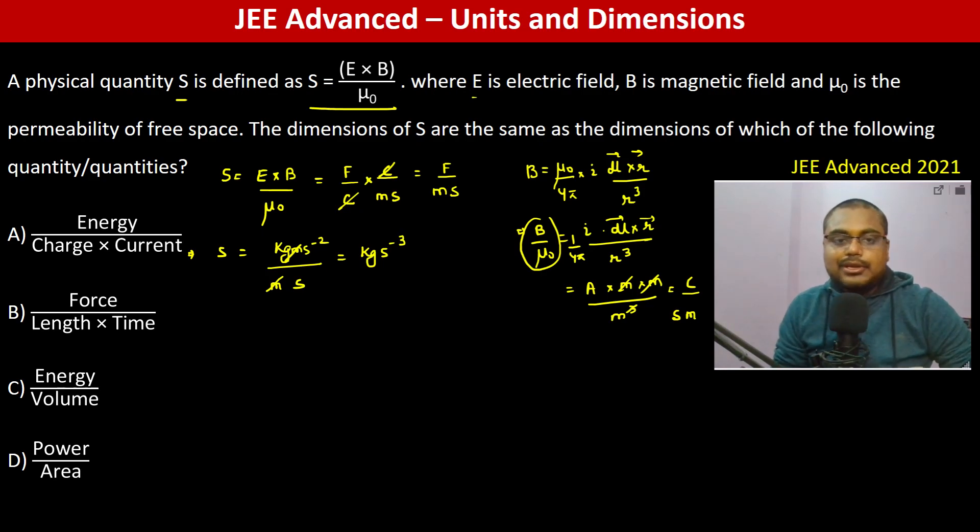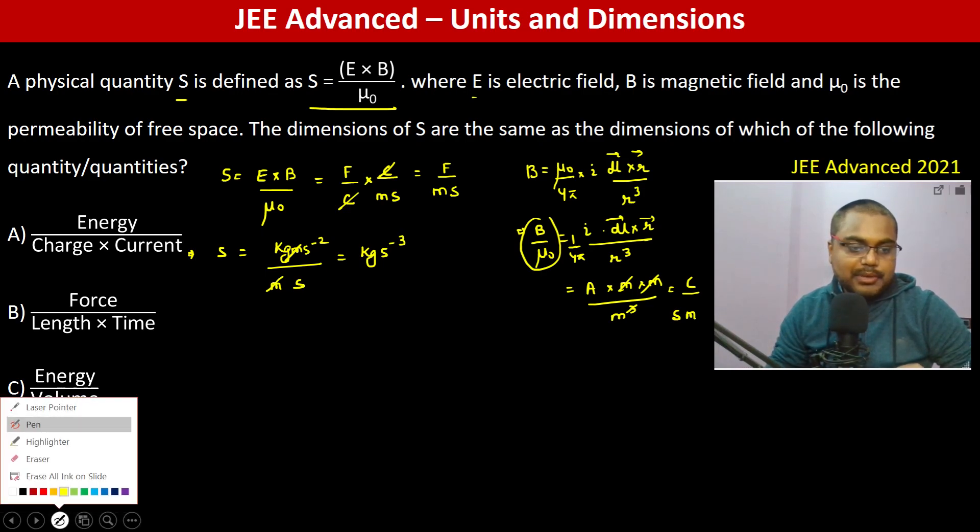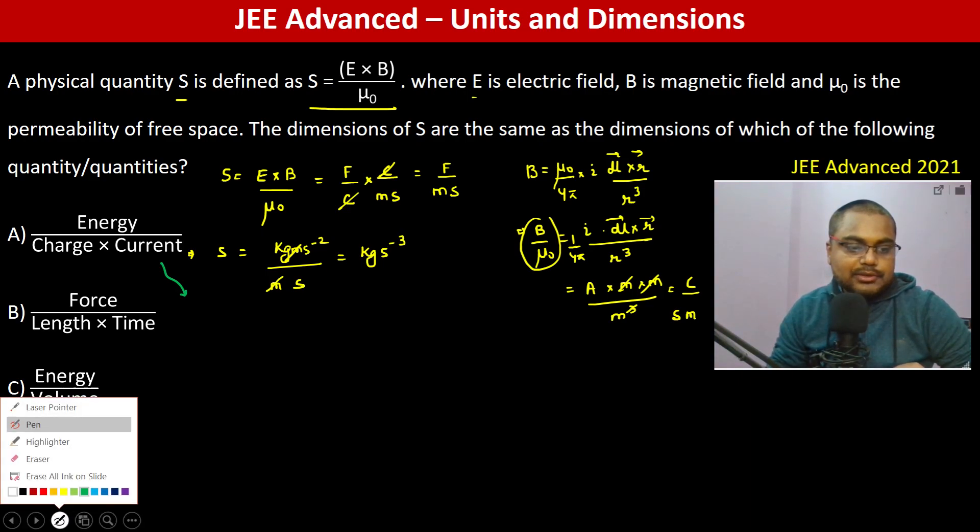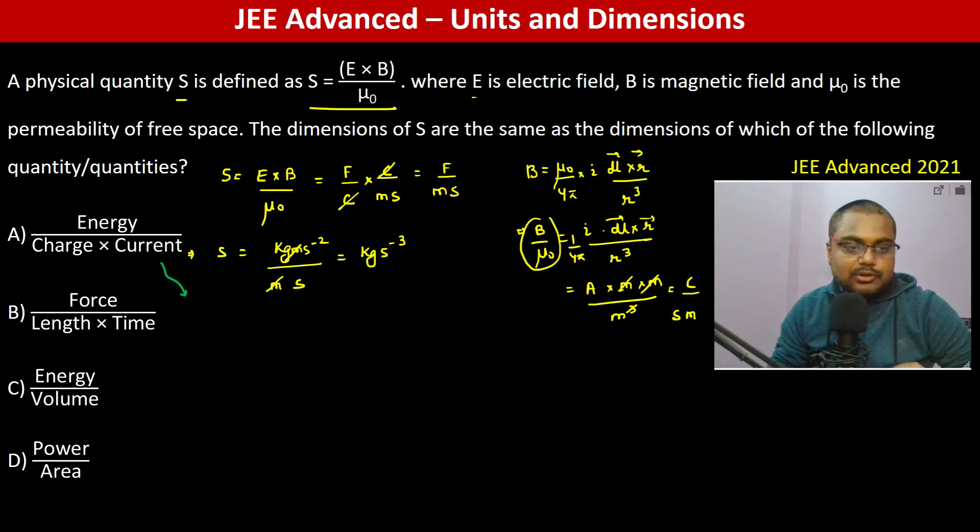Now we have to find out what this matches with. Let us start one by one. The first one: energy by charge into current. Energy is joule, so newton meter divided by charge into current. Charge is coulomb, and current is coulomb per second. So notice, coulomb square remains in the denominator, so this cannot be the answer.